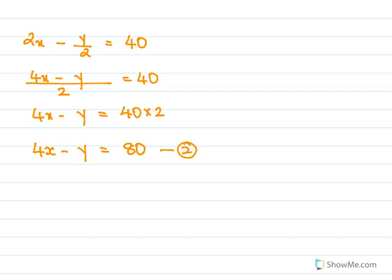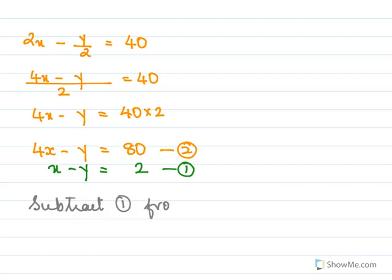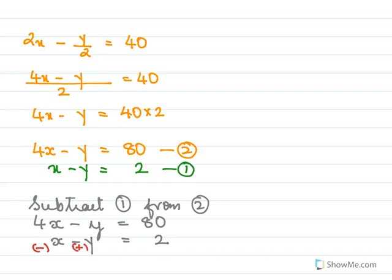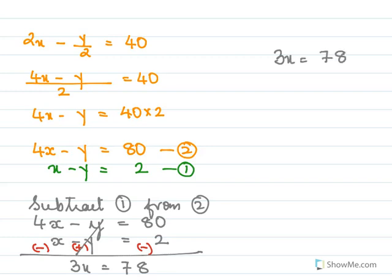We have equation one: x minus y equals 2, and equation two: 4x minus y equals 80. Subtracting equation one from equation two, the y terms cancel, giving 3x equals 78, so x equals 26 years. Since we needed to find the age of A, and A was taken as x, the age of A equals 26 years.